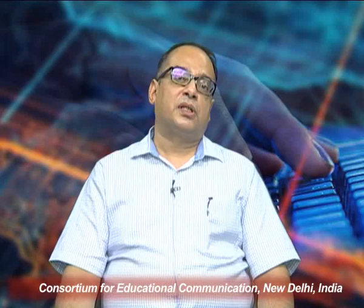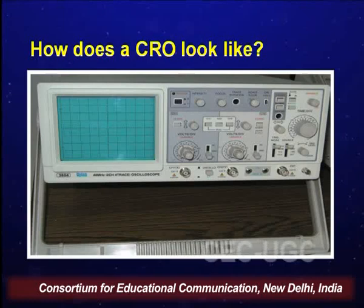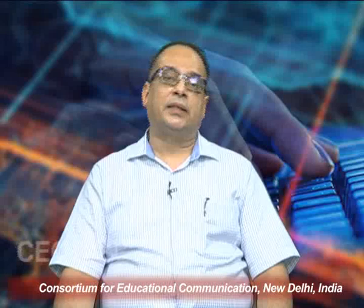This all we will see in today's class. Typically, the CRO looks somewhat like this. It would have a screen, certain vertical controls, certain horizontal controls, and certain general controls. We will go step-by-step to understand how this CRO is used for visually looking at the quality of a signal.